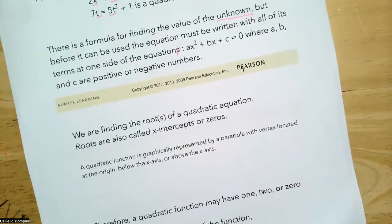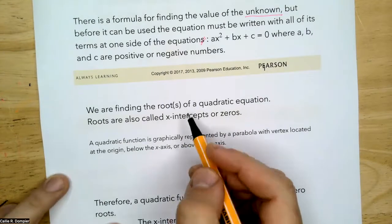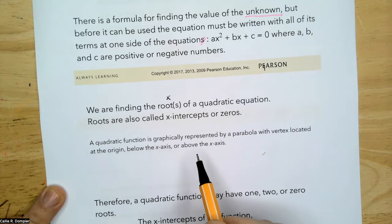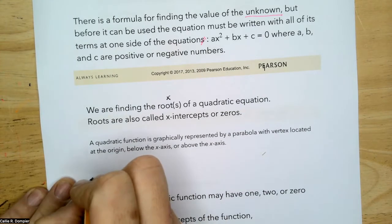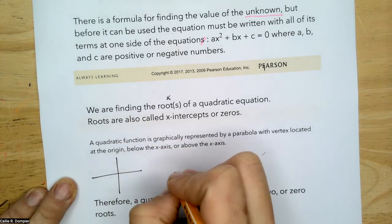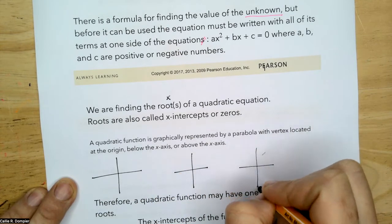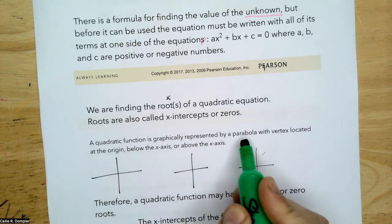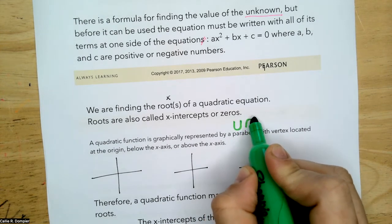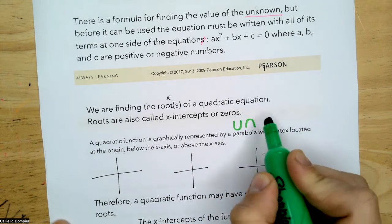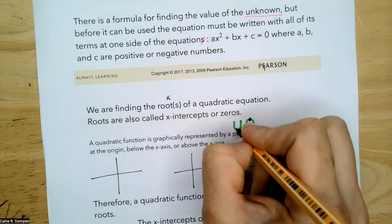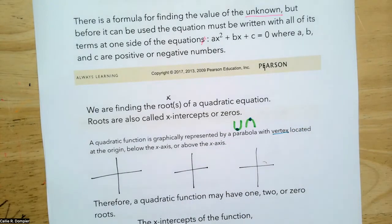We are finding the roots of your quadratic equation. The x values are also called the x-intercepts or the zeros. A quadratic function is graphically represented by a parabola, with a vertex at the top or bottom. For example, a vertex located at the origin means x is zero — one x value.